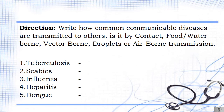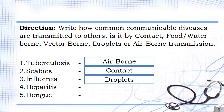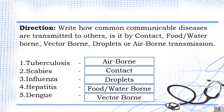Let's see if you understand our lesson. Write how common communicable diseases are transmitted to others — is it by contact, food or waterborne, vectorborne, droplets, or airborne transmission? Number 1: Tuberculosis, 2: Scabies, 3: Influenza, 4: Hepatitis, 5: Dengue/malaria. Answers: 1. Airborne, 2. Contact, 3. Droplets, 4. Food or waterborne, 5. Vectorborne. Very good, class!